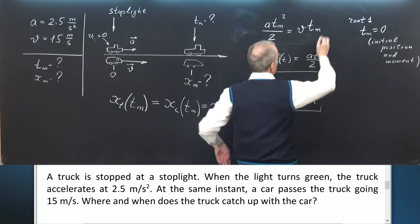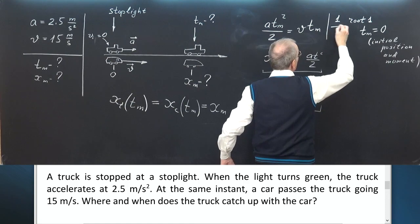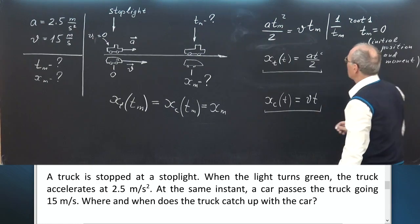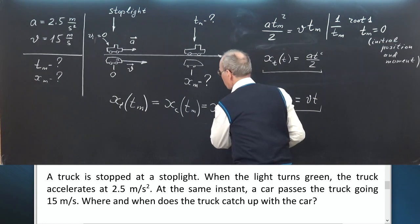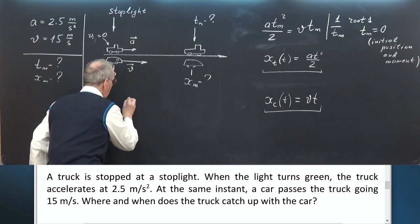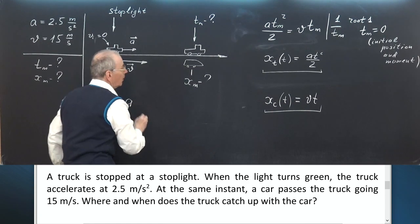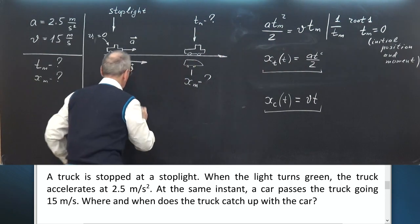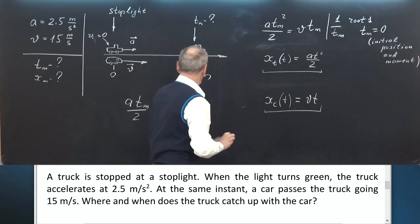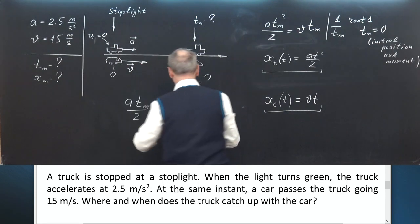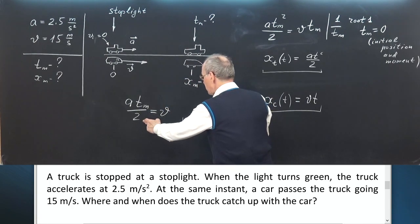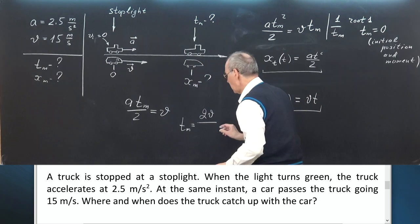Now divide it by T_m. We have a T_m over 2 equals V. Hence, T_m equals twice V divided by A. This is the moment in time when the truck catches up with the car.